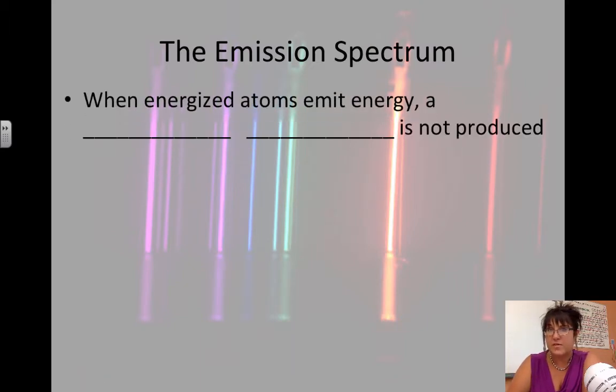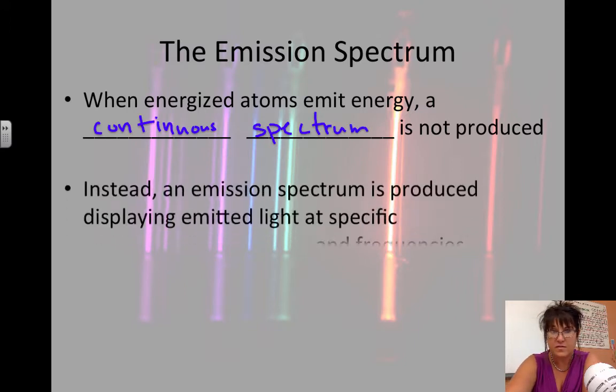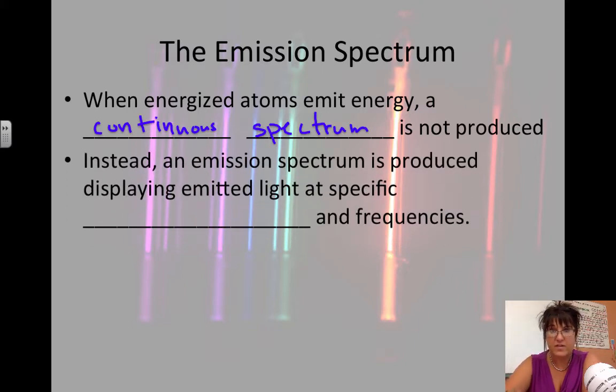So energized atoms emit energy, but they don't produce a continuous spectrum like the rainbow, where it's all of the colors. Instead of having a rainbow effect, we see only specific wavelengths and frequencies.